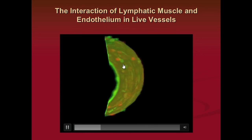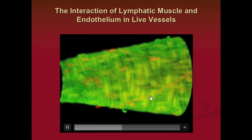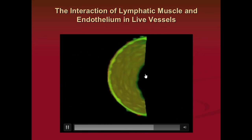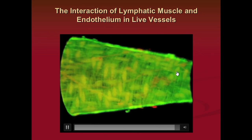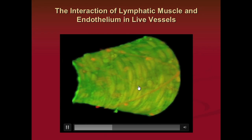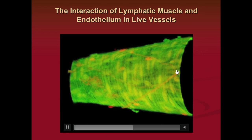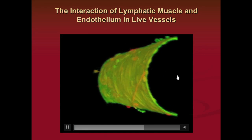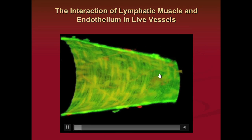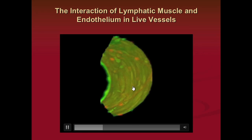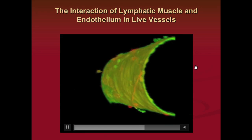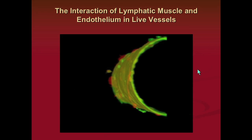This is a confocal image showing the interaction of lymphatic muscle cells wrapped around the vessel and the endothelial cells on the luminal side. Those endothelial cells and muscle cells are very closely apposed because the lymphatic vessel is exceptionally thin-walled — even thinner than veins. These interactions allow effective modulation and control of both pumping and conduit activity of the vessel.